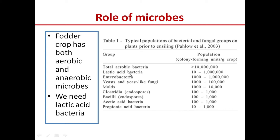It is the lactic acid bacteria which play the key role in anaerobic fermentation of green fodder. Fodder crops have both aerobic and anaerobic microbes on them. We need lactic acid bacteria for fermentation. These groups of microorganisms — this huge number — are present on the crop. They are basically phyllosphere microorganisms, or phytoplane microorganisms, which are naturally present on the crop.